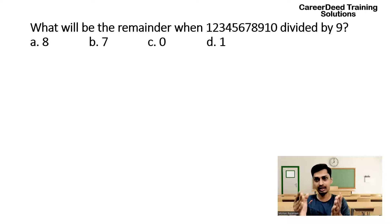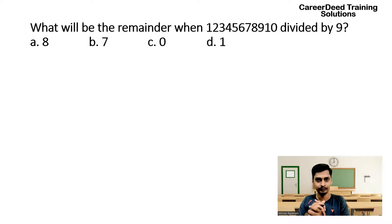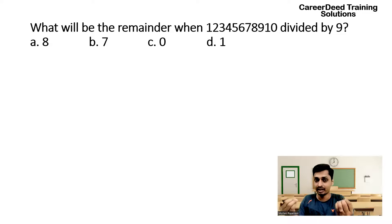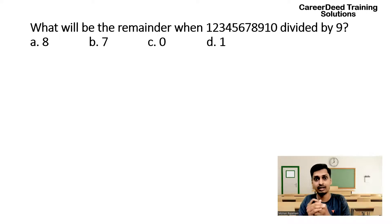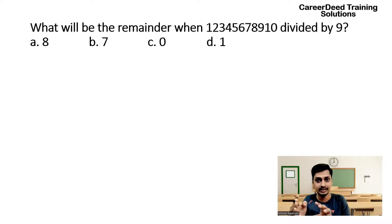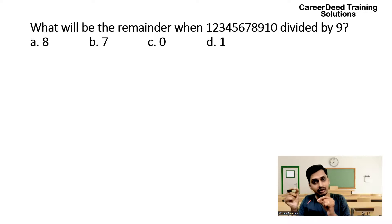So when you divide this bigger number by 9, what is the remainder? We know the divisibility criteria of number 9. How to check whether a number is divisible by 9 or not? We have to add all the digits. If the sum is equivalent to a number which is divisible by 9, then the complete series is divisible by 9.